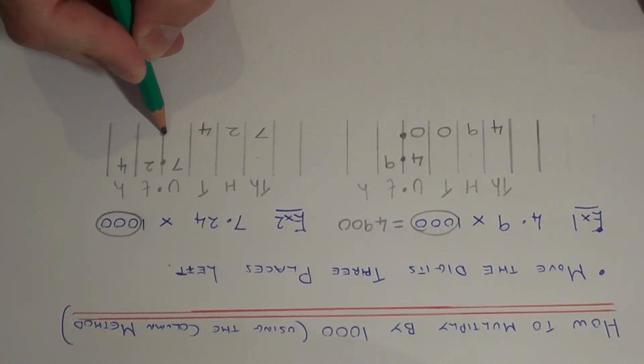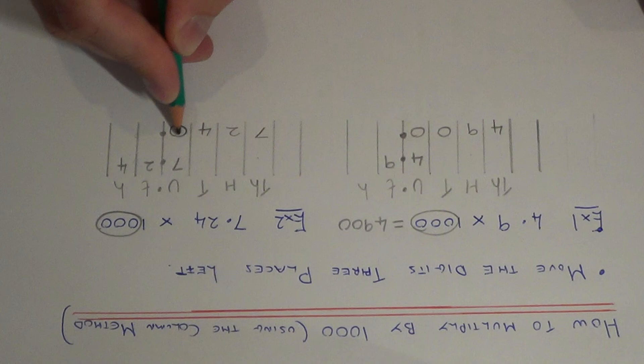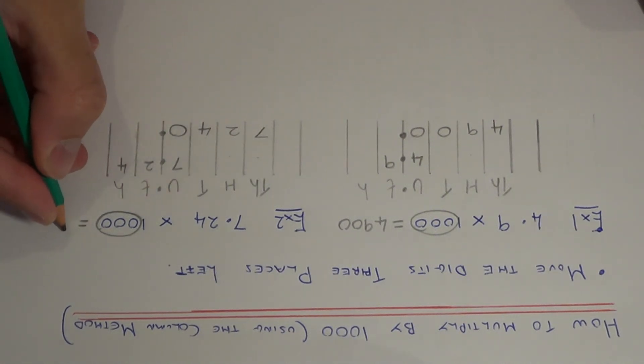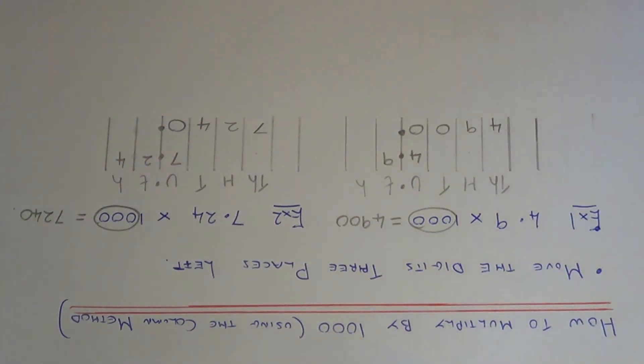Again, the decimal point doesn't move. That stays still. And we have one gap between the decimal point and your numbers. So we need to fill that in with a zero. So our final answer is 7,240. Thanks for watching.